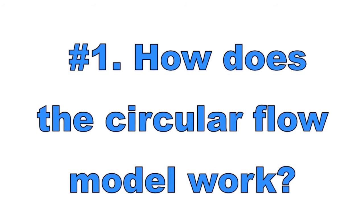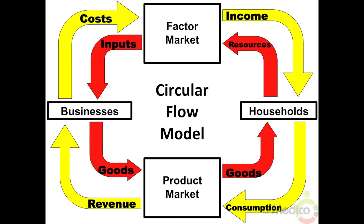Number 1: How does the circular flow model work? The circular flow model is a system of incentives that shows how businesses and households interact through product markets and resource markets. Households demand goods and services from businesses in the product market, while businesses supply those goods and services. Businesses demand resources from households in the factor market, while households supply those resources. The government can be added to the middle of the diagram since it provides public goods and services and transfer payments to households and businesses, while collecting taxes from households and businesses.